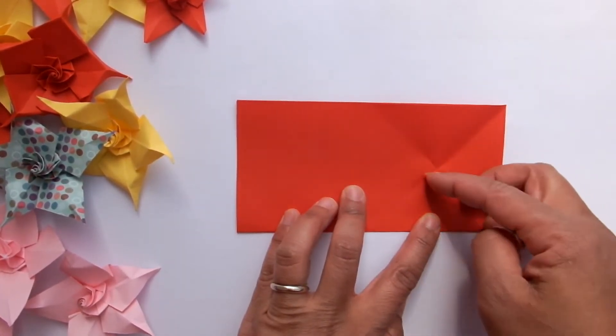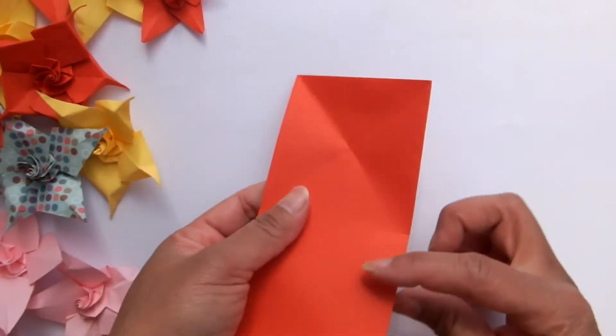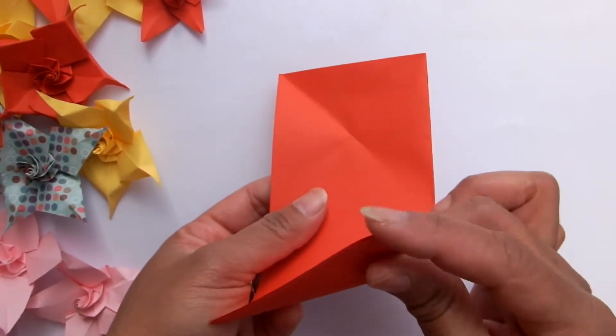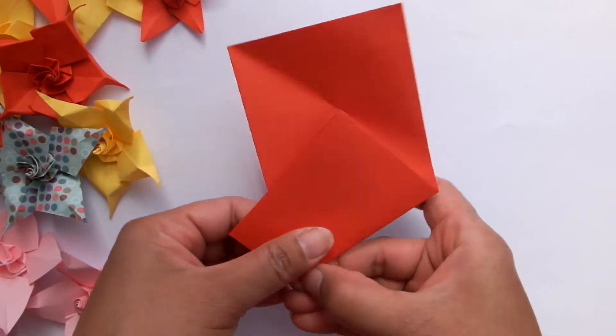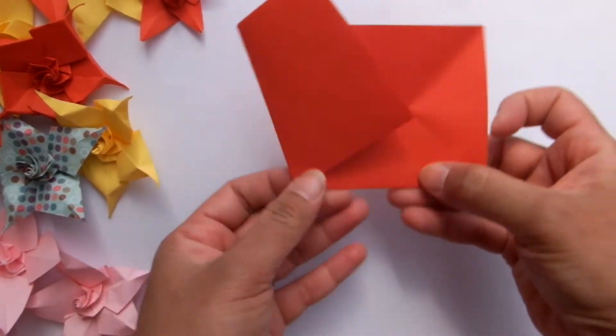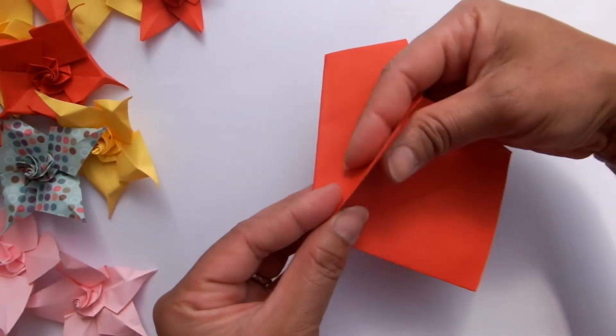Now we got the intersection here and we want to bring this corner to the intersection, like so. Okay. And fold it back.